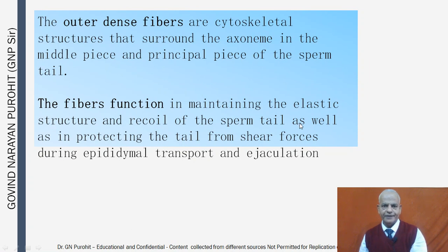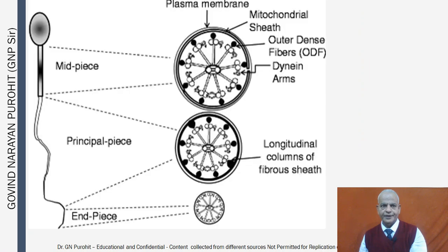The outer dense fibers are cytoskeletal structures surrounding the axoneme in the middle piece and principal piece. They function in maintaining the elastic structure and recoil of the sperm tail, as well as protecting the tail from shear forces during epididymal transport and ejaculation. You can see the structure of the dense fibers, microtubules, dynein arms, and longitudinal columns of the fibrous sheet.